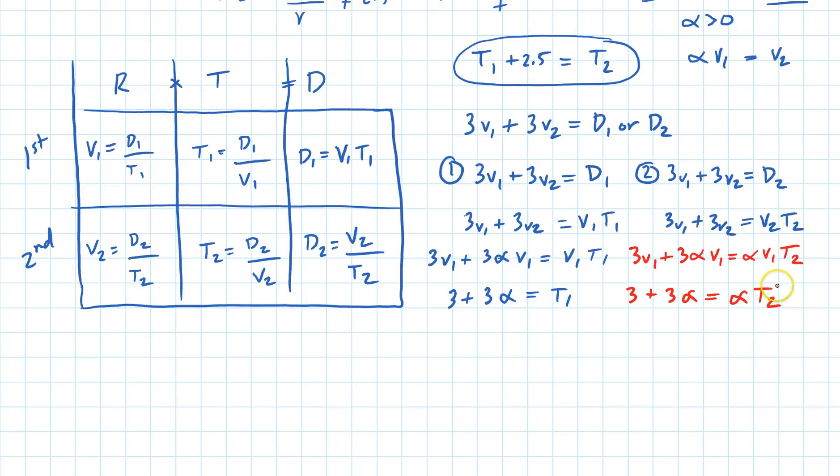Now what I did, I substituted right here, so this is 3 plus 3 alpha equals alpha times T1 plus 2.5. Then I substituted this in to here.